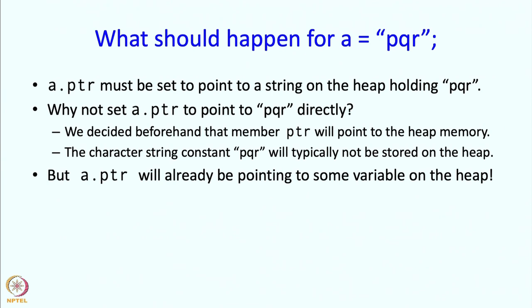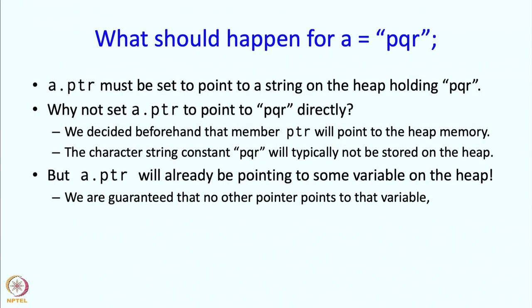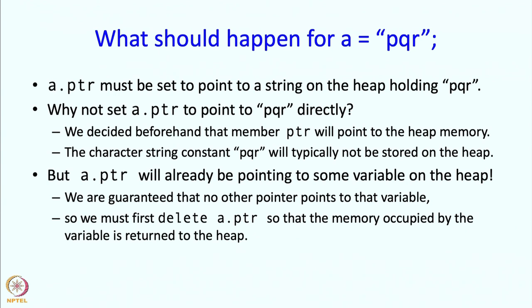So the first consideration is that we must copy pqr to the heap because in general it may not be on the heap. But there is also another consideration: a.ptr we want to set to point to this pqr, but it is already pointing to some variable on the heap. So we are making a.ptr point to something else, meaning that variable it currently points to is going to be useless, and therefore we should be deleting it. We are guaranteed that no other pointer points to that variable, so we can just delete a.ptr.